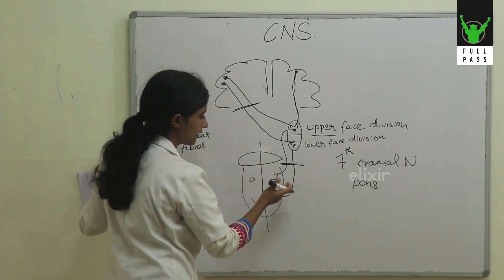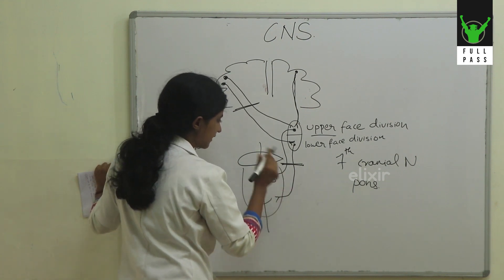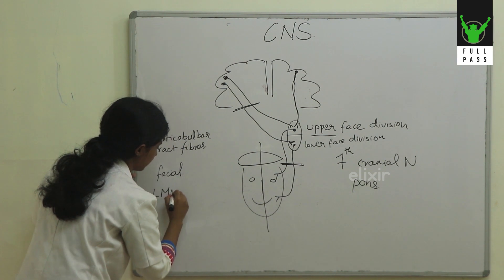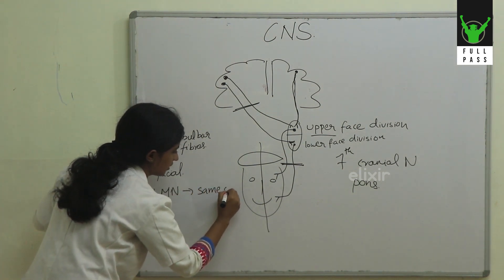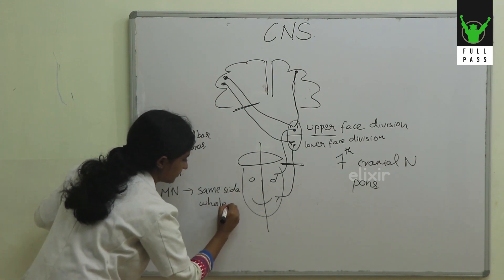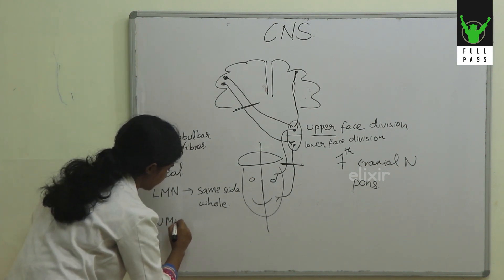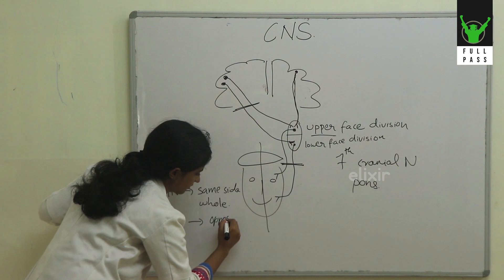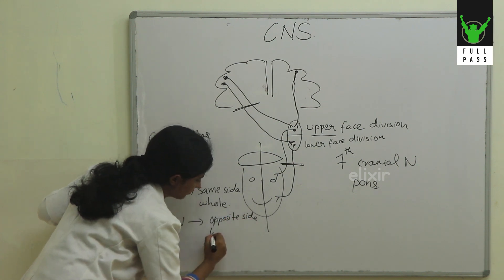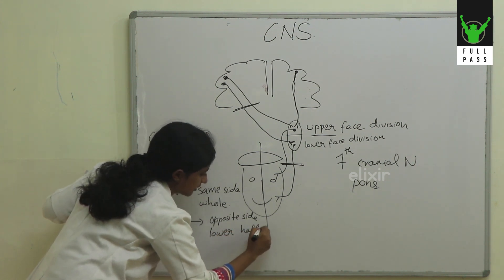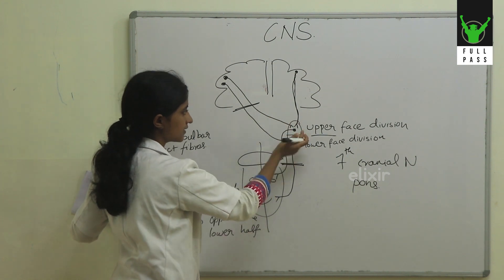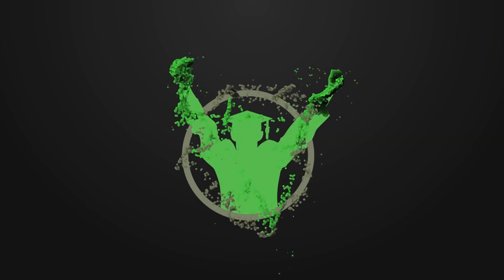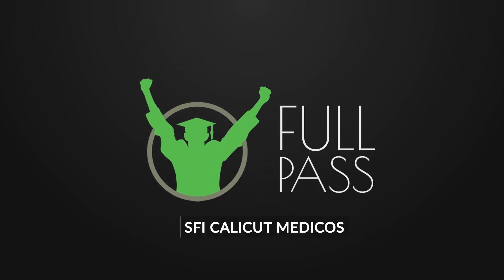So in facial nerve palsy: if it is an LMN lesion, the whole of the same side is affected. If it is a UMN lesion, the lower half of the opposite side is affected. The upper part is spared because it receives bilateral supply from both hemispheres.